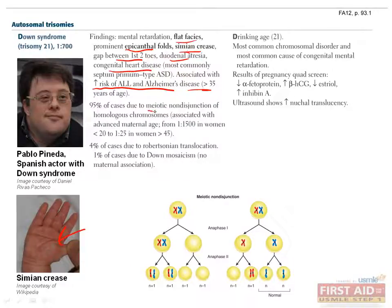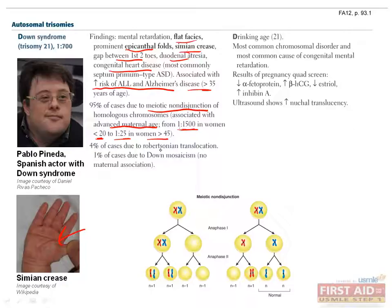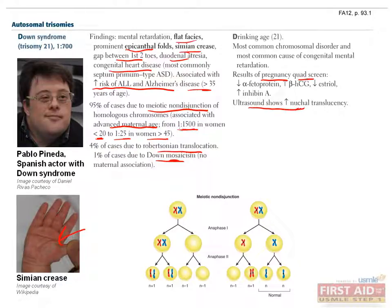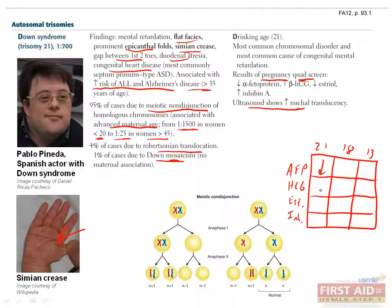The most common cause of Down syndrome is meiotic nondisjunction, which becomes increasingly common with advanced maternal age. At age 20 or younger, this nondisjunction occurs in only 1 out of 1,500 pregnancies, whereas in women over the age of 45, it occurs in 1 in 25 pregnancies. More rarely, this can also be caused by Robertsonian translocations or Down's mosaicism, when nondisjunction occurs very early in embryogenesis resulting in only some cells having the trisomy. Down syndrome can be diagnosed during pregnancy by ultrasound in the first trimester, where a fetus with Down's will have increased nuchal translucency, and the quad screen can be used in the second trimester, measuring four things in the mother's serum. If a baby has Down syndrome, alpha-fetoprotein and estriol will be decreased, whereas HCG and inhibin will be increased.